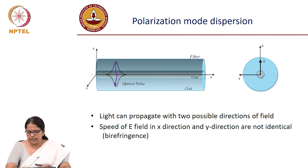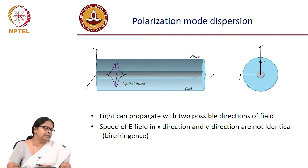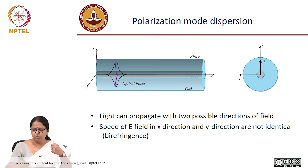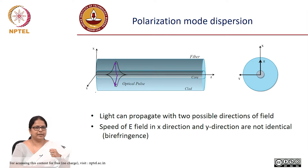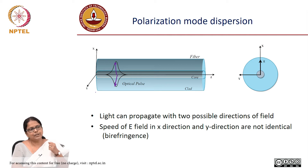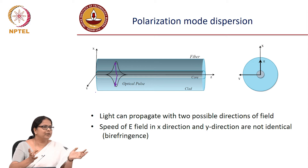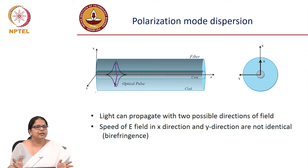In polarization mode dispersion, we are talking about the walk-off or difference in speed because the two polarizations may not travel with the same speed. The fiber is actually a birefringent medium, where different polarizations experience different refractive indices.